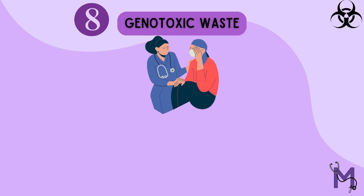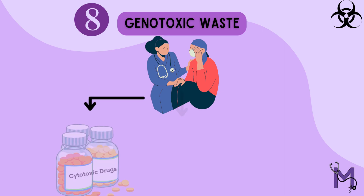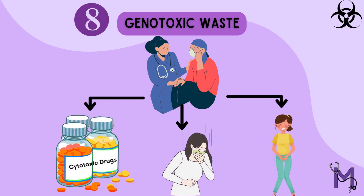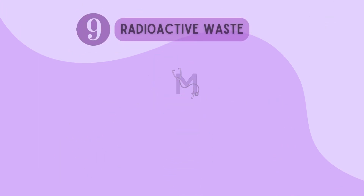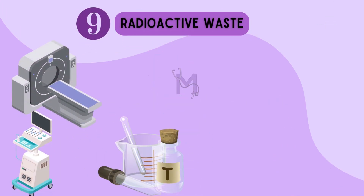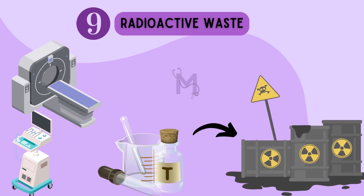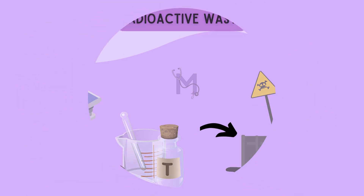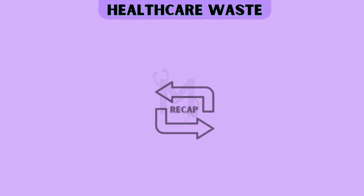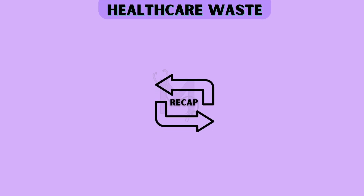We also have genotoxic waste and radioactive waste. Genotoxic wastes are substances which have carcinogenic properties, like cytotoxic drugs or the vomit and urine of patients using these drugs. Radioactive waste, on the other hand, includes unused liquid from radiotherapy and contaminated glassware, among others.